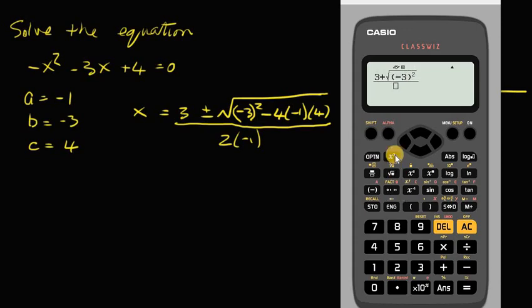I just know it's always going to be positive. Now that it's in there I'll leave it, but I would probably just put in 9. Minus 4 times a is equal to minus 1, minus 1 times c which is 4.